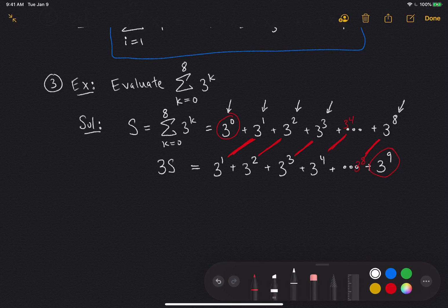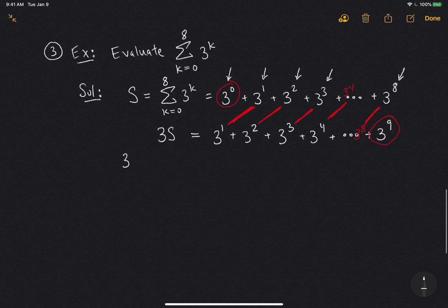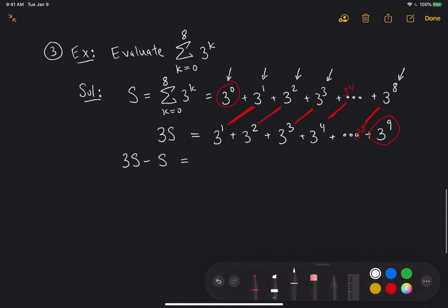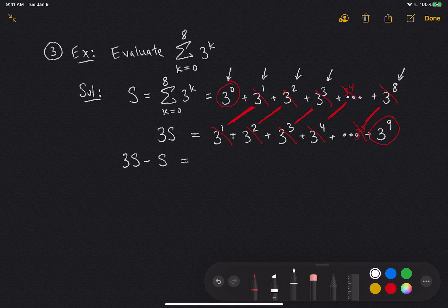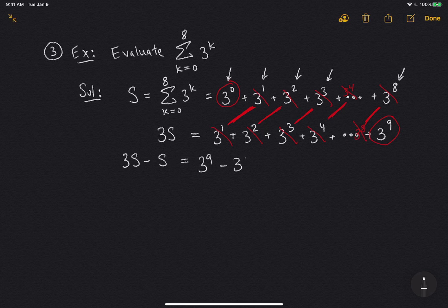So if I did something like take 3S minus S, all the terms there would cancel. 3 to the 1 would cancel, 3 to the 2 would cancel, 3 to the 3 would cancel, 3 to the 4. They would all cancel, except for the 3 to the 0 and the 3 to the 9. So what I'm left with is 3 to the 9 minus 3 to the 0.